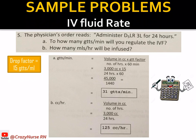The drop factor is 15 drops per ml. Convert 3 liters to cc: that gives 3000 cc. So: 3000 cc times 15 drop factor, over 24 hours times 60 minutes. This gives 45,000 over 1,440, and the answer is 31 drops per minute. If you get a decimal answer, round to the nearest whole number. Regulate the IV fluid at 31 drops per minute.